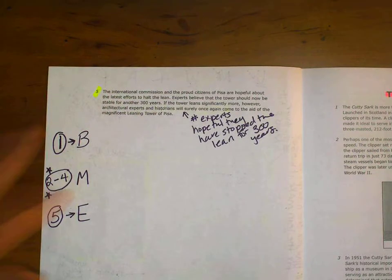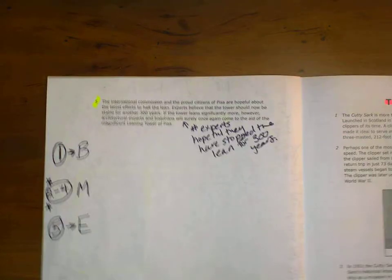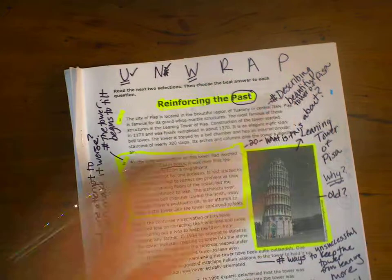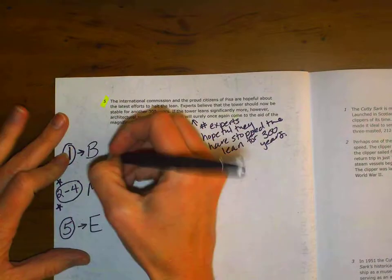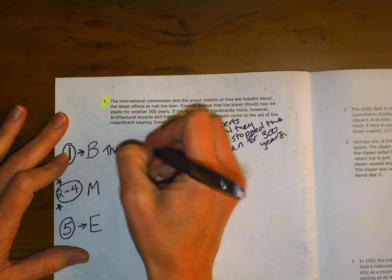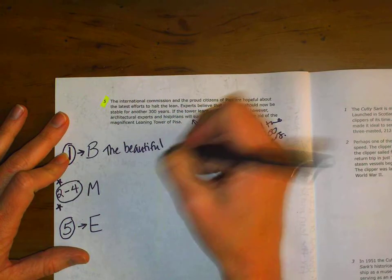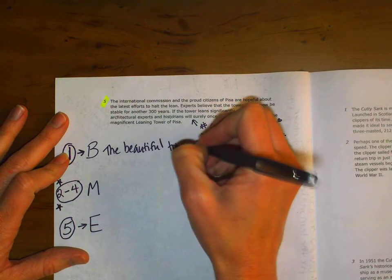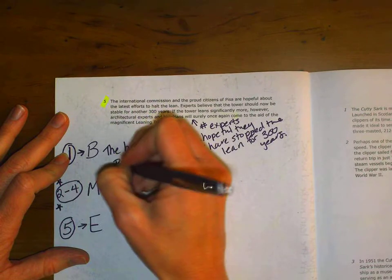So, now I'm going to write my beginning, middle, end summary. The first paragraph, if I go back and look at my hashtag, was about the beautiful tower. So, I'm just going to say the beautiful tower of Pisa.